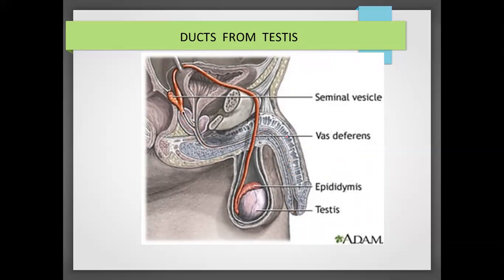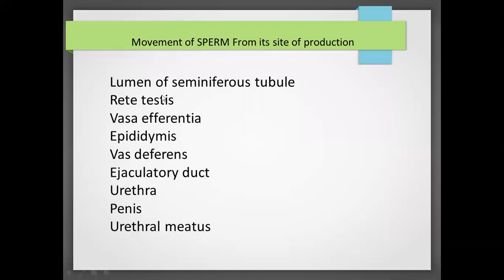The external genitalia portion includes the penis, which is present around the urethra and gives it protection. The penis is not a simple tube — it is made of spongy muscle tissue with blood vessels. Now, the flow chart shows how to trace the movement of sperm from the site of its production in sequential order, which is very important.